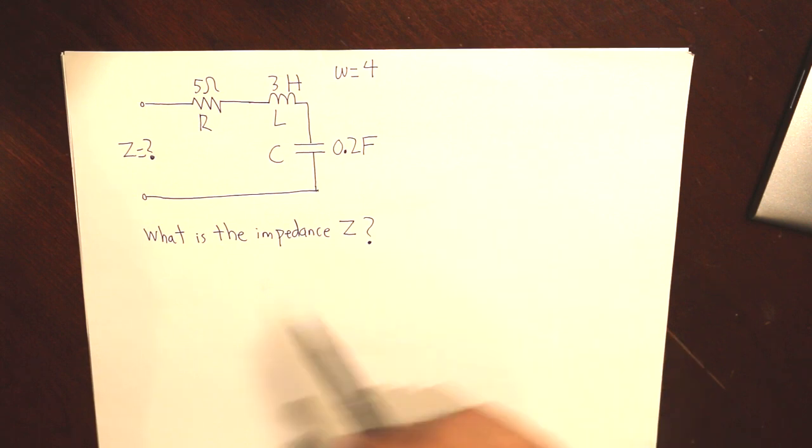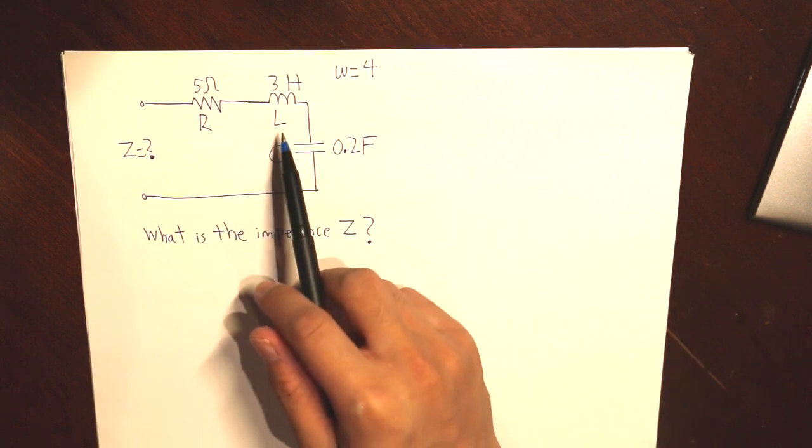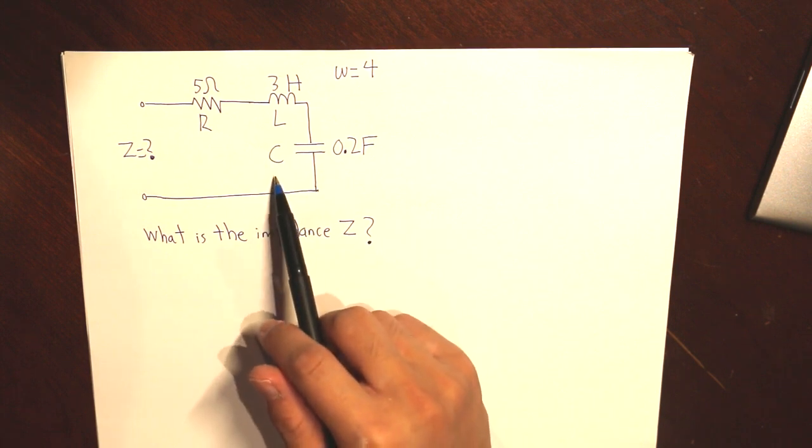Now here's a scenario, given a circuit, we have a resistor, an inductor L, and a capacitor C.